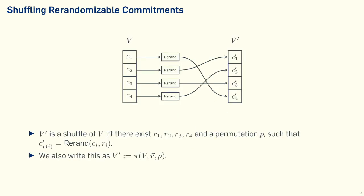Let's talk about what it means to shuffle commitments. It means we have a vector of commitments V, with commitments C1 through C4 in this example. To shuffle means we re-randomize each one of those commitments and then permute them at random. V prime is a shuffle of V if and only if there exists randomness R1 through R4 and a permutation P such that C prime PI is the re-randomization of CI with RI. For short, we write V prime = PI(V) with randomness R and permutation P.